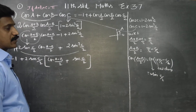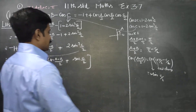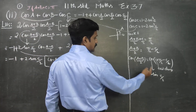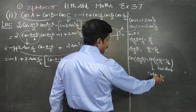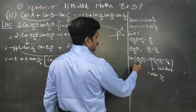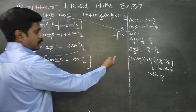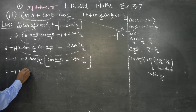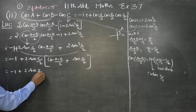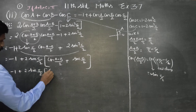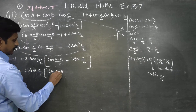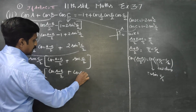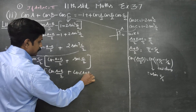Sin(C/2) is common. Sin(C/2) is equal to cos((A+B)/2) — update on the top line. Minus 1 plus 2 sin(C/2) · cos((A-B)/2) plus cos((A+B)/2).